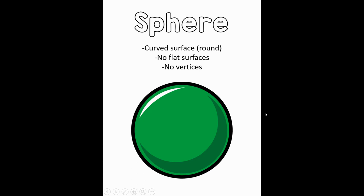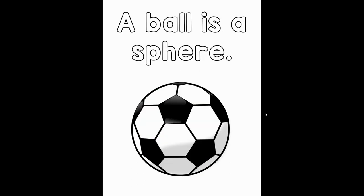If we think about an object in the real world that is shaped like a sphere, we could say that a ball is a sphere. It is completely round. It has no flat surfaces and no corners or vertices.